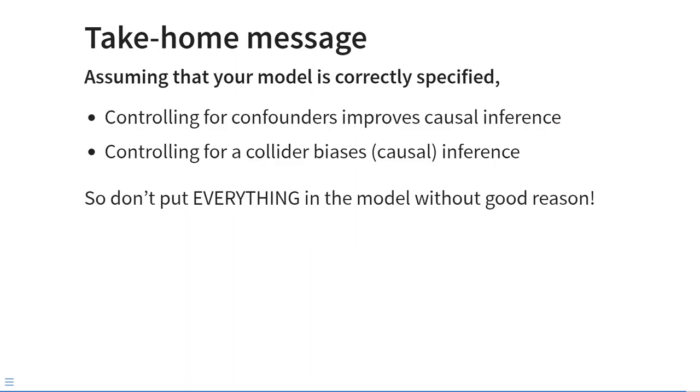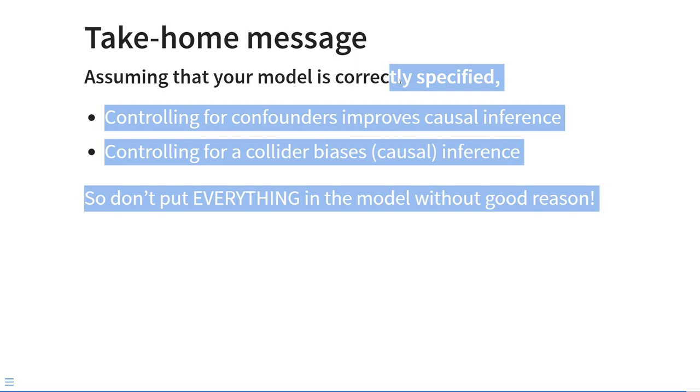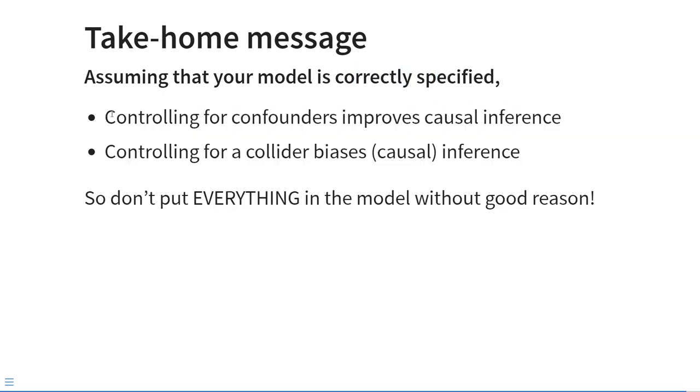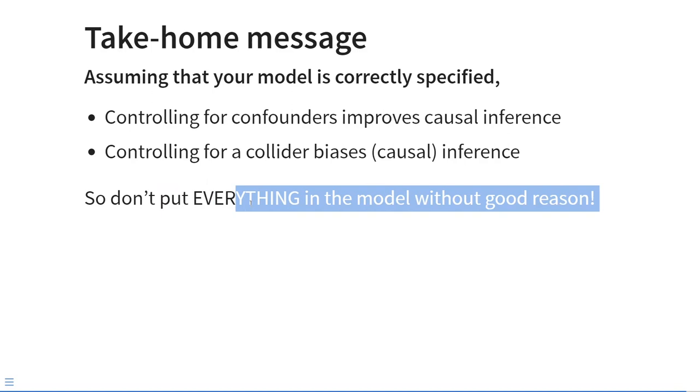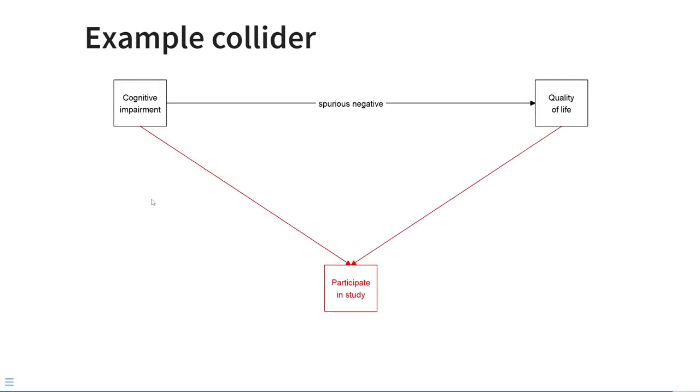So this is just a brief primer on causality. And the main message that I want you to take home is that assuming that your model is correctly specified, controlling for confounders will improve the causal inferences you draw from your model. But controlling for a collider is a deadly sin, and it's going to bias any causal inferences drawn from your model. So don't just put everything into your model without having a very good reason, and try to always draw these kind of box diagrams to think about the causal relationships between the variables that you studied and maybe even some that you didn't study.